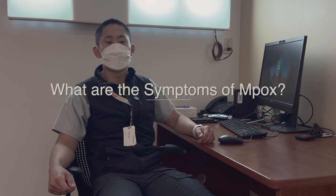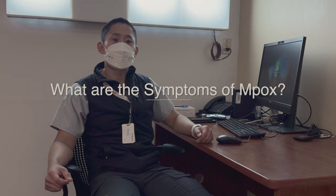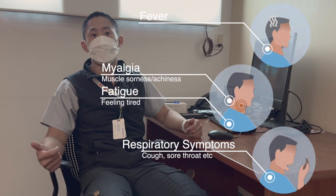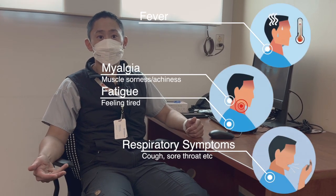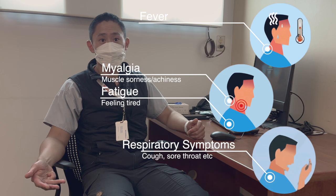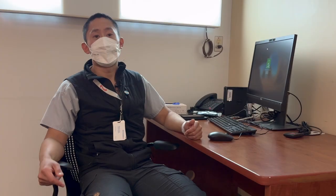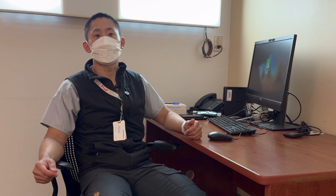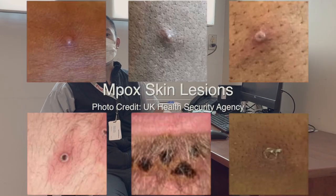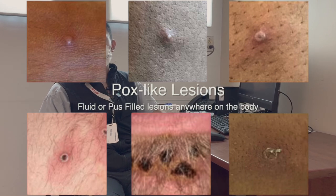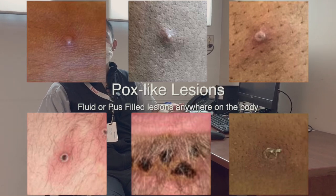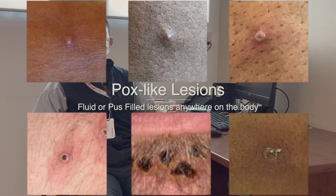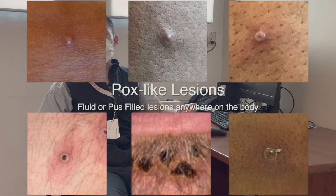What are the most common symptoms of Mpox? Mpox doesn't present very specifically initially. During what we call the invasive phase, people can have classically fever, myalgias, fatigue, and respiratory symptoms — so that's not very specific. After that phase, people can develop skin lesions. These skin lesions look like pox-like lesions, meaning they're either fluid-filled or pus-filled. They start to scab over and could present on any part of the body.